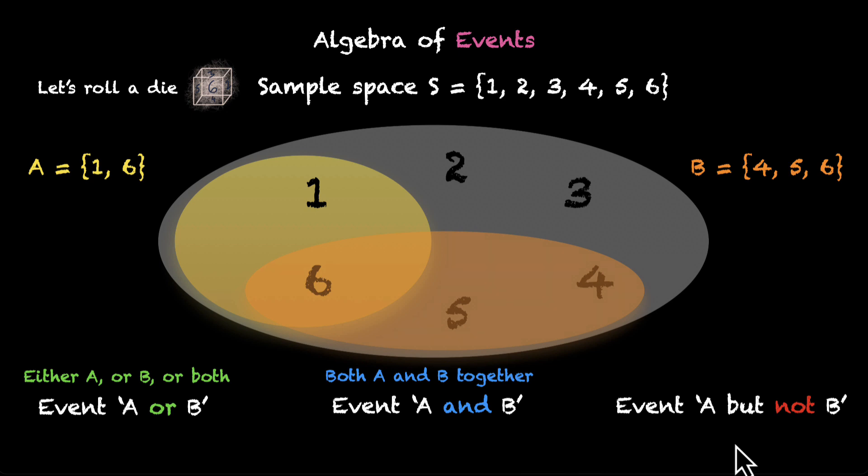And what about this last one? This says event A but not B. Well, this means A but not B. This event wants the event A to happen, but it does not like B. It does not want B to happen.